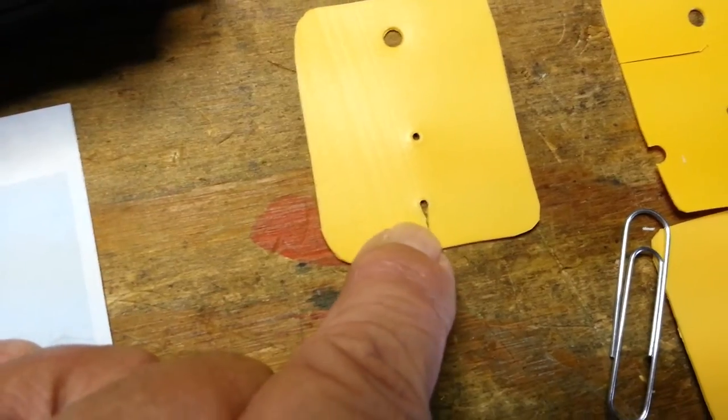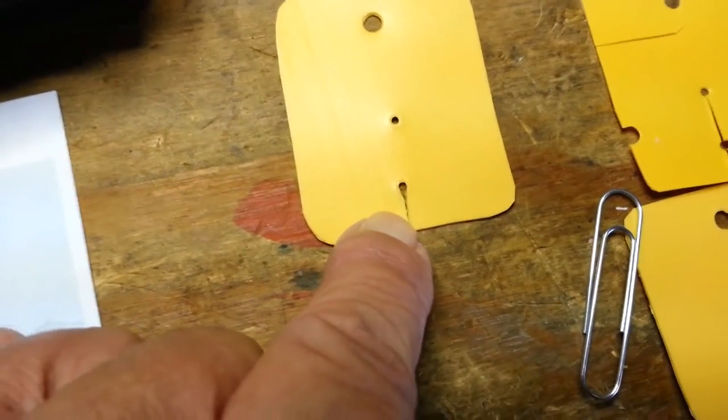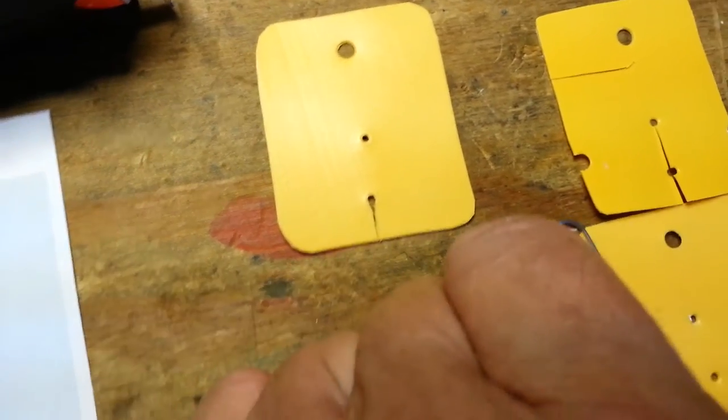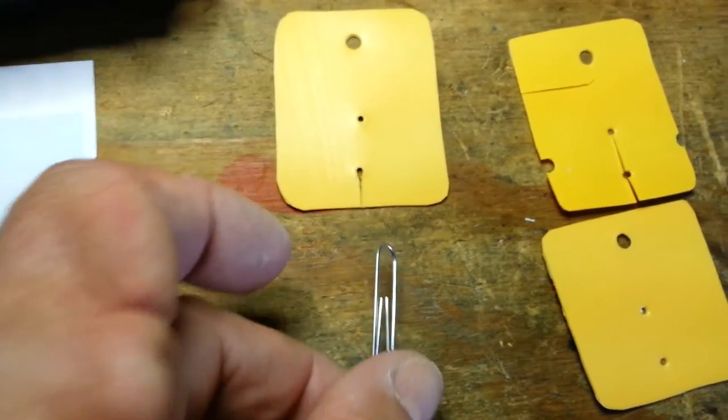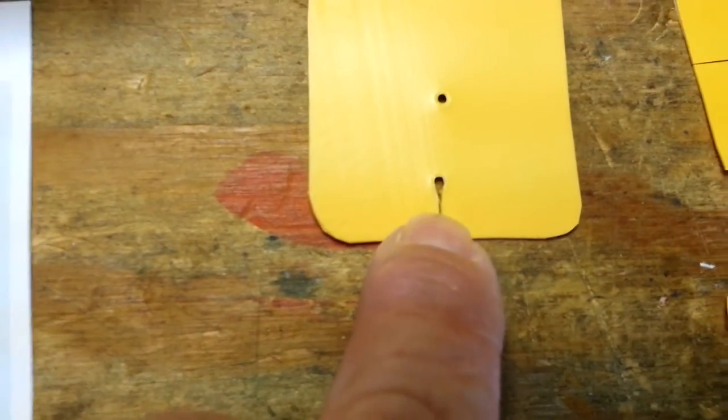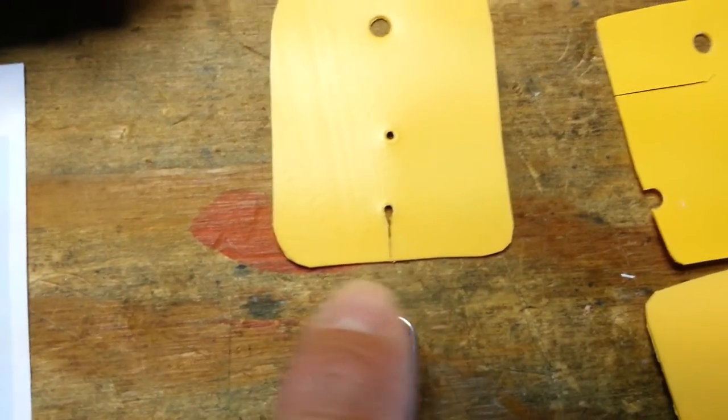You just pop the paper clip in there and it'll pop right out. The problem is, if you don't taper the bottom of that hole, it'll get stuck and pull the kite into the water if you get a hit on a fish.